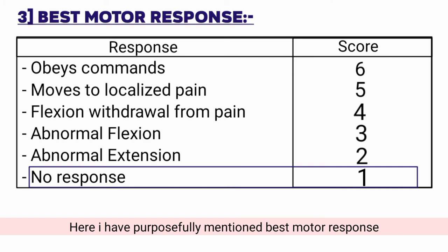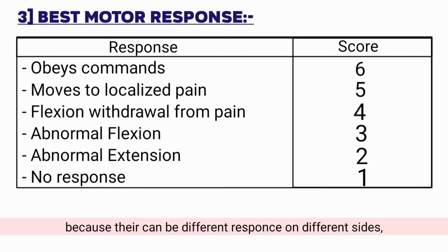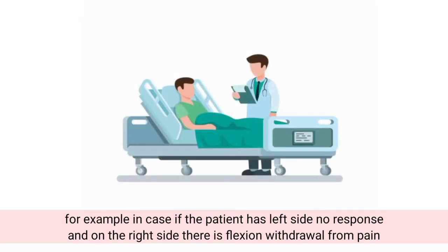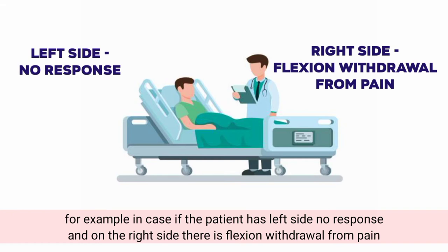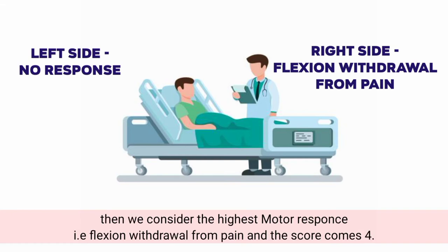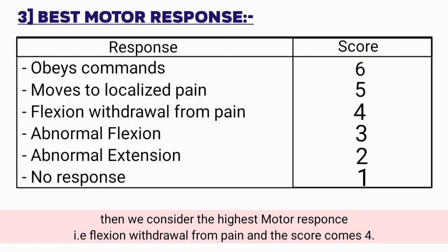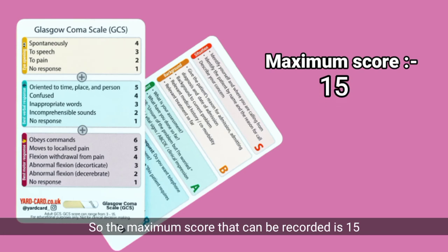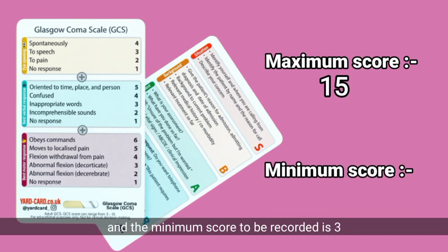I have purposefully mentioned best motor response because there can be different responses on different sides. For example, if the patient has no response on the left side but flexion withdrawal from pain on the right side, we consider the highest motor response — flexion withdrawal from pain — and the score is 4. The maximum GCS score that can be recorded is 15, and the minimum score is 3.